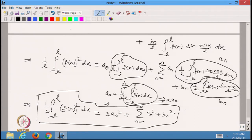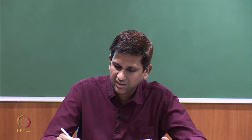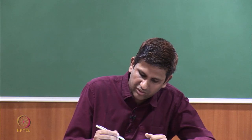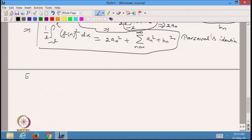This equality is called Parseval's identity: (1/l)∫₋ₗˡ [f(x)]² dx = 2a₀² + Σₙ₌₁^∞ (aₙ² + bₙ²). This identity relates the square of the function to a summation over the Fourier coefficients, and it is used in a large number of applications — including finding the sums of many series.